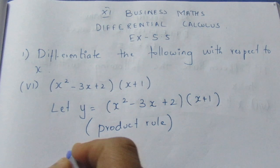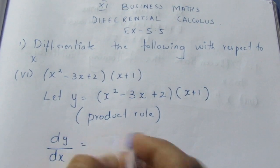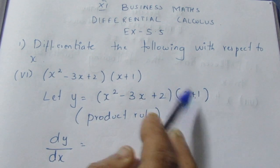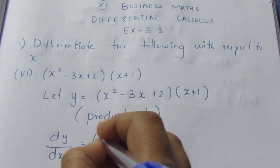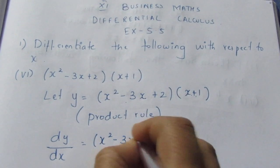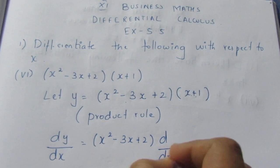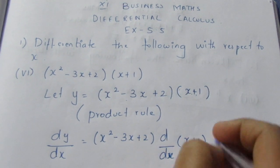We will differentiate dy/dx. Product rule: (x² - 3x + 2) d/dx(x + 1) + (x + 1) d/dx(x² - 3x + 2).